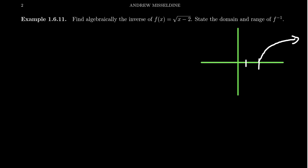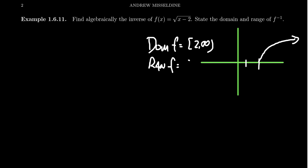It looks like the standard square root function but shifted to the right by 2. Therefore, the domain of f is going to equal 2 to infinity. And then the range of f, because we didn't do any vertical transformations, the range will just be 0 to infinity. We can look at the domain and range of this function very quickly through our graph transformations.